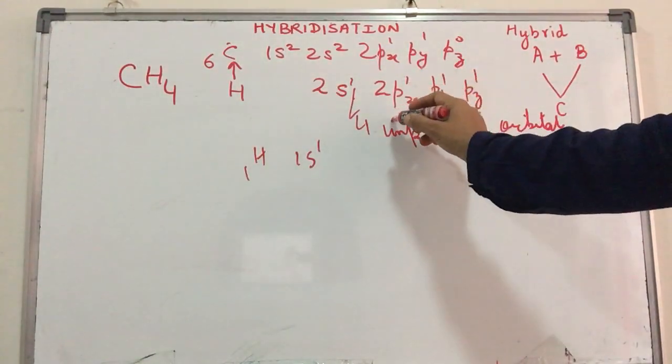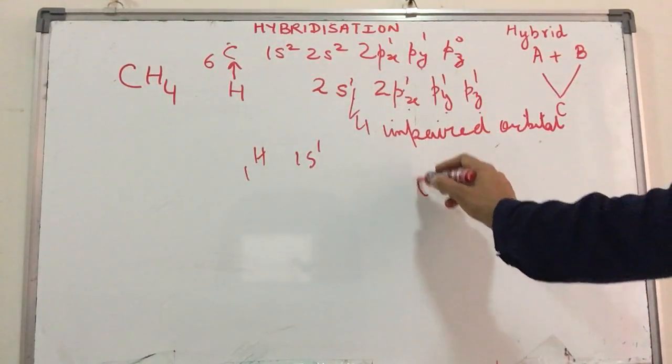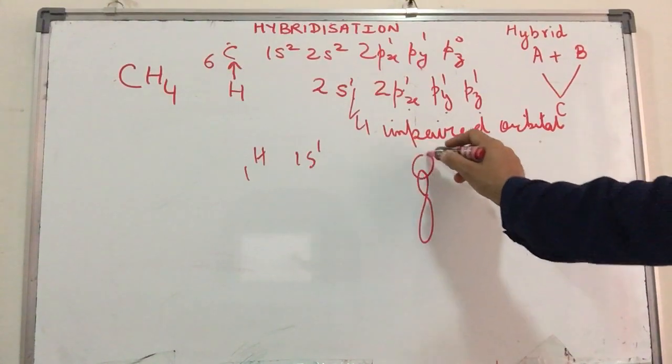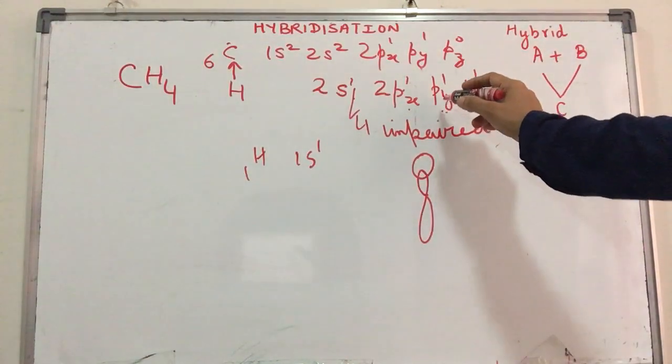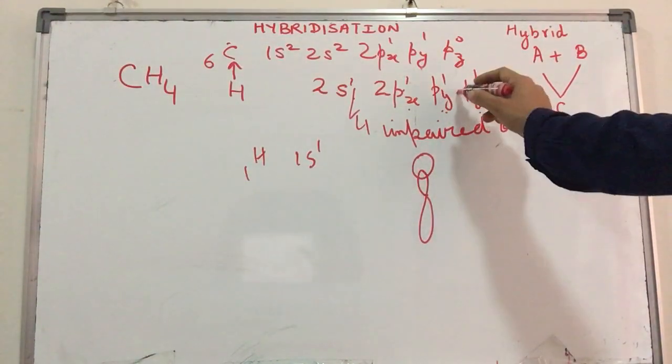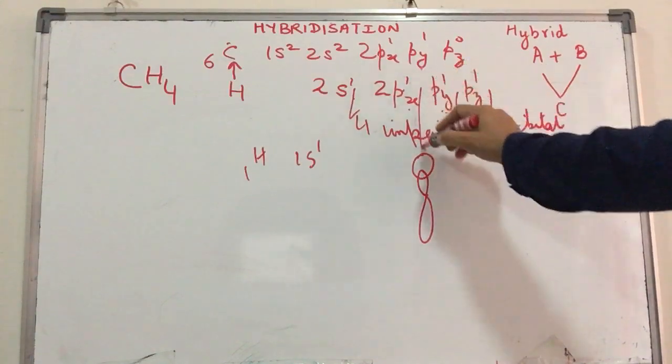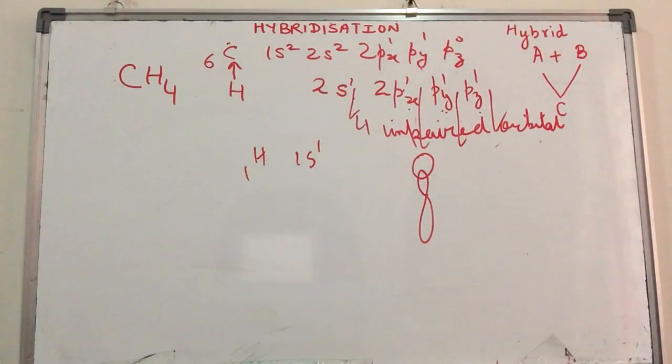The second hydrogen overlaps with the P atomic orbital, creating an SP overlap. Another hydrogen with P gives SP overlap, SP overlap, SP overlap. So there are three SP overlaps and one SS overlap.